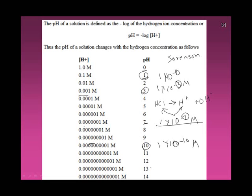If I have a pH of 13, I know the molarity is 1 times 10 to the minus 13. The problem is if I have a pH of 12.2, it's not going to be a simple 1 times something — it'll be some other number. But the exponent is always going to be within one unit of what the pH is. That's always a good check.